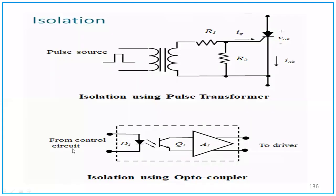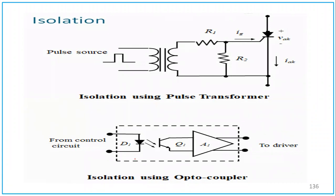For isolation, we can use a pulse transformer or an optocoupler. Those who have done hardware circuits may be familiar with these gate drive techniques, and you will apply them when doing your final project. The isolation circuit provides the pulse to the gate.